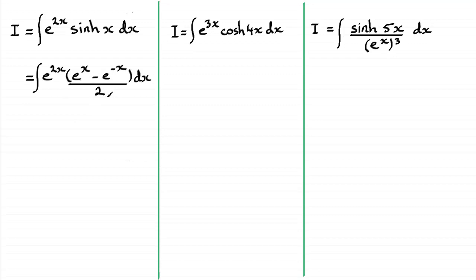Now I'm going to pull out a half and expand our brackets. Doing that just gives us a half the integral of all of e to the three x minus e to the x.